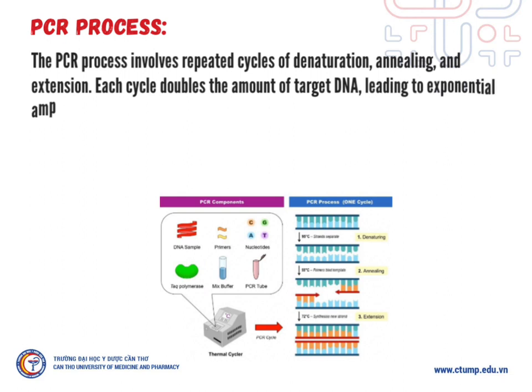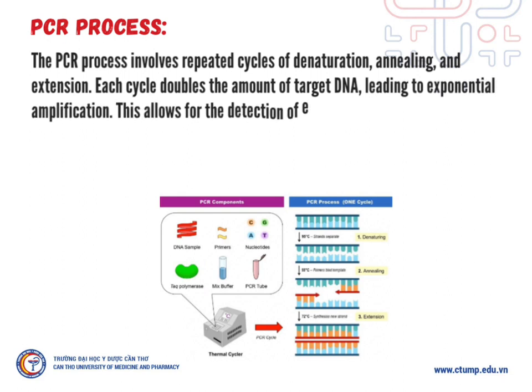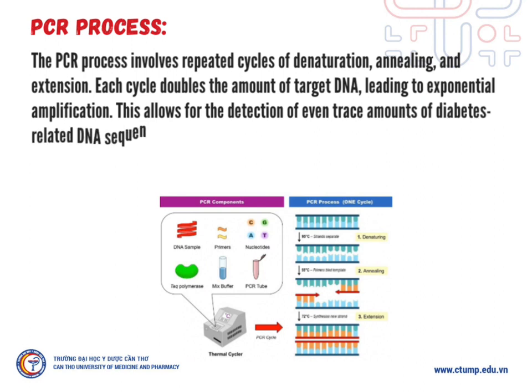Each cycle doubles the amount of target DNA, leading to exponential amplification. This allows for detection of even trace amounts of diabetes-related DNA sequences in a sample.